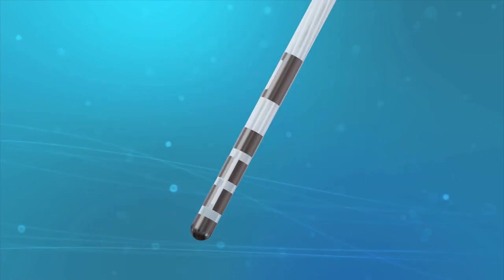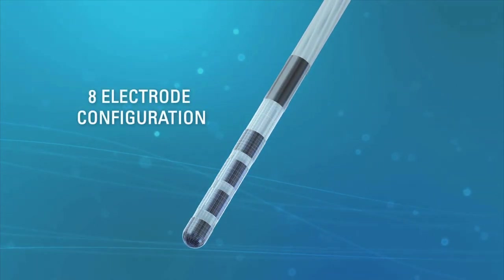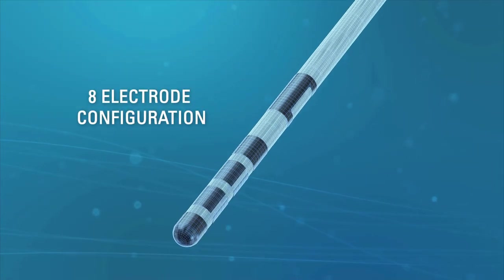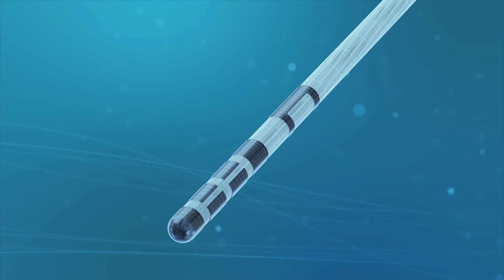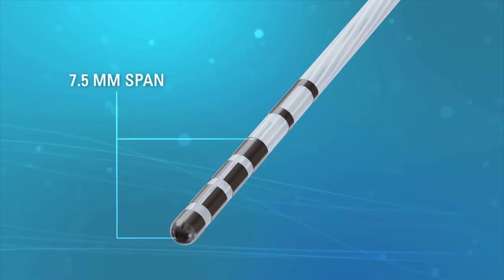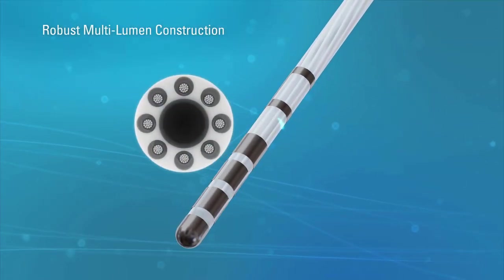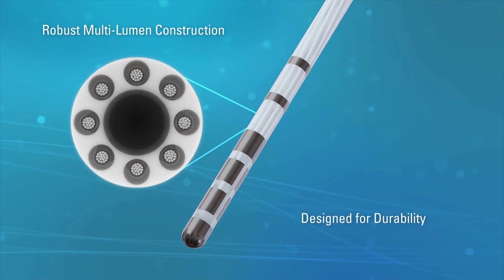The Versailles Cartesia Directional Lead offers an 8-electrode configuration of 1-3-3-1 with a total span of 7.5 mm and a robust multi-lumen lead construction for durability and precise targeting.